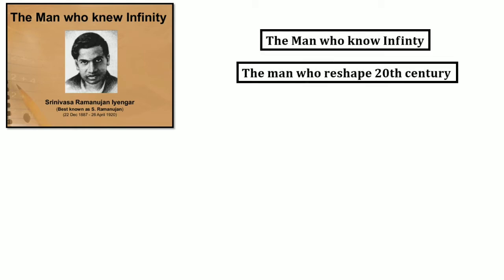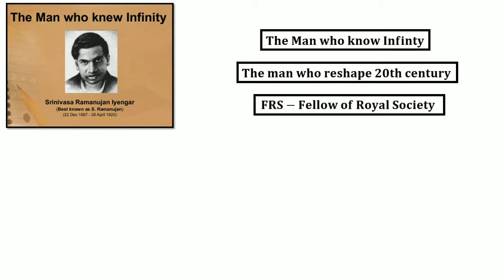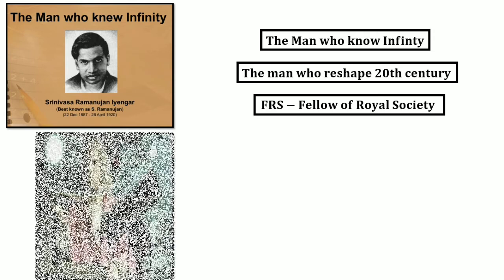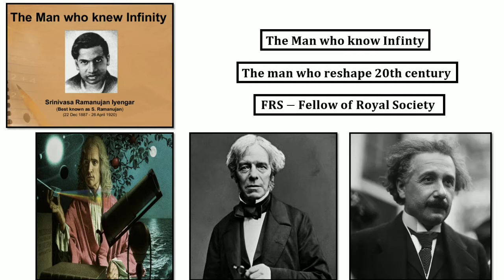The person shown on the screen is Srinivas Ramanujan, or S. Ramanujan. This guy is a famous and great super-genius mathematician. As you can see from his name, he is Indian. You can easily estimate this guy's intelligence by the titles given to him, like 'The Man Who Knew Infinity.' He received recognition in the 20th century and also holds the title of FRS — Fellow of the Royal Society. Very few people have held this title, like Isaac Newton, Michael Faraday, and Albert Einstein.